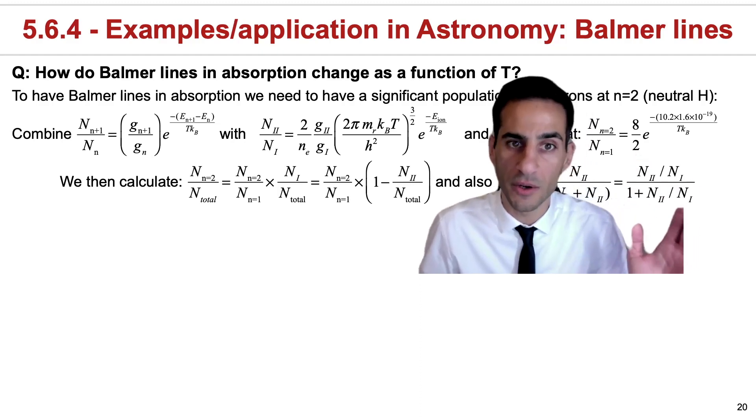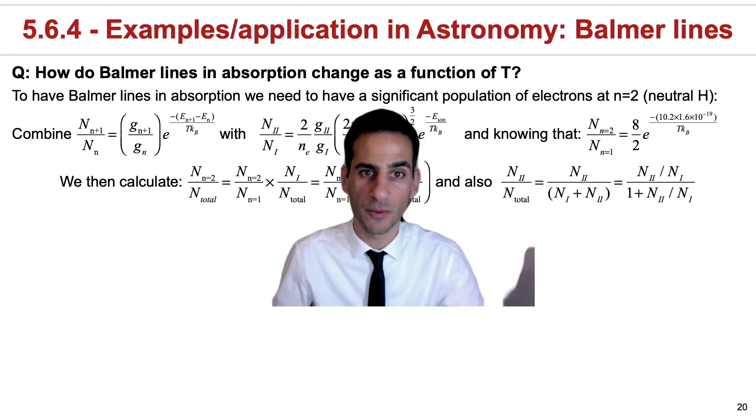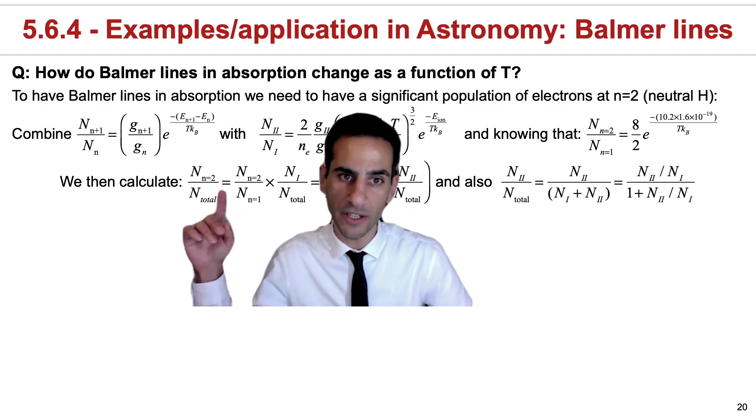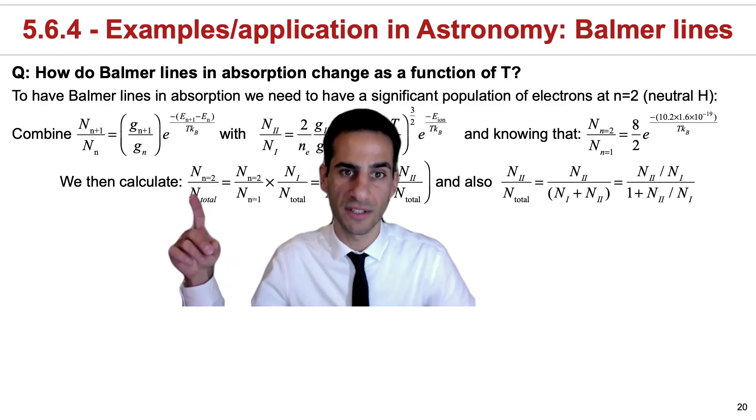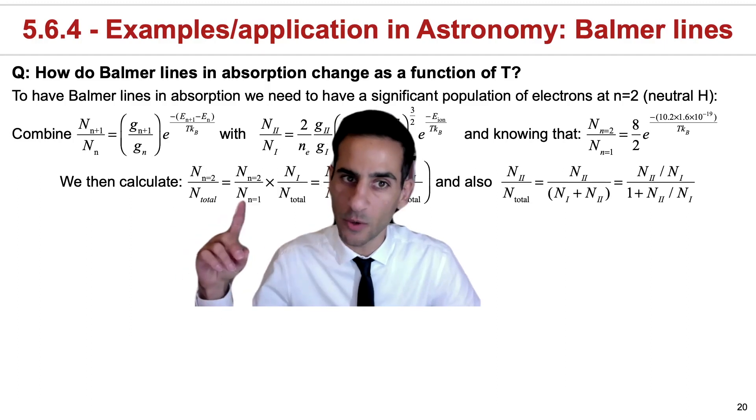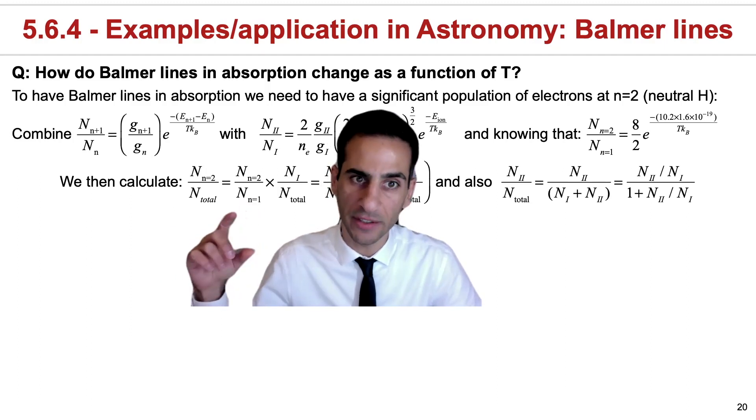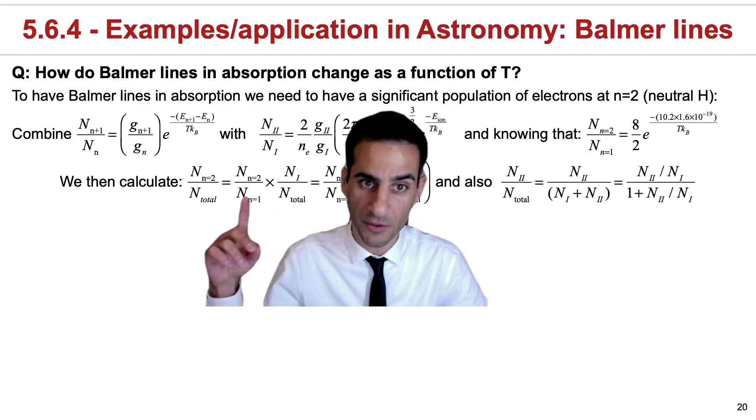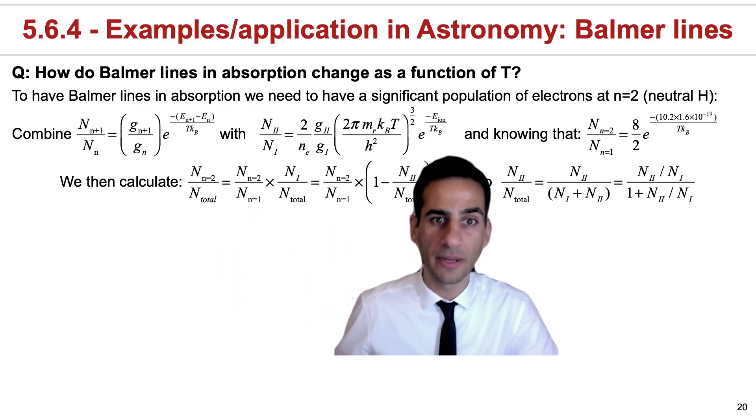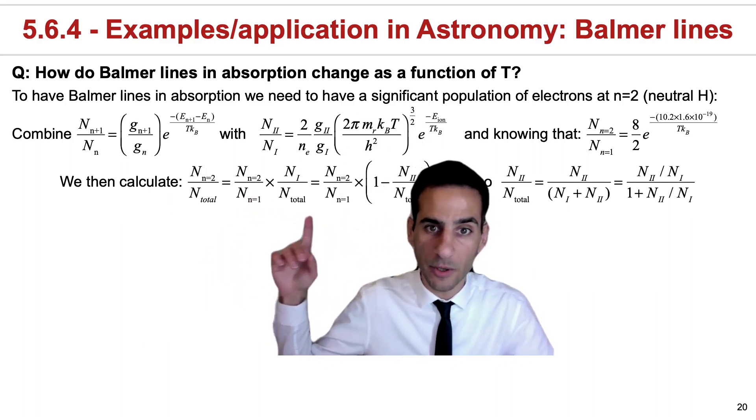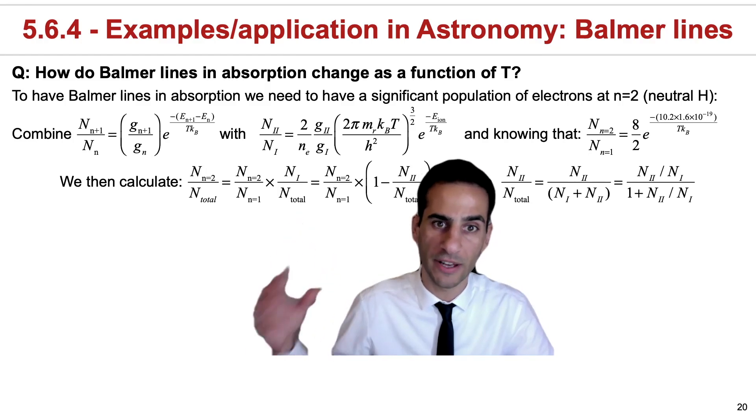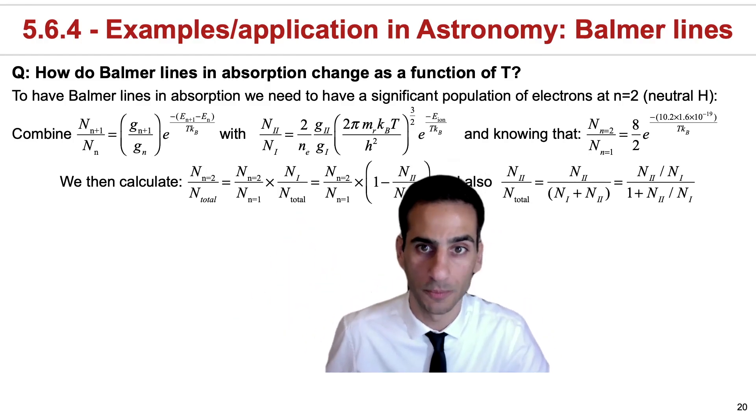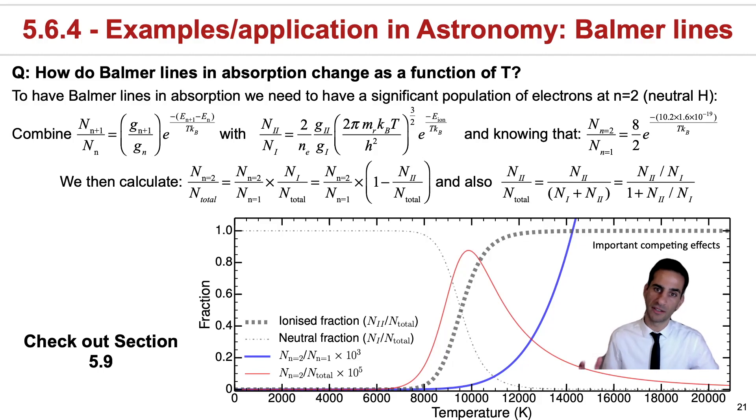And we can also very easily realize that what we want to calculate is essentially the ratio of atoms at n equals 2 versus the total number of hydrogen atoms. So what you really want in order to predict the strength of Balmer lines is to look at this ratio, which you can get with the Boltzmann equation. But it's also important that you will need to be multiplying by the total number of atoms that are neutral. If you do all these calculations, then you can make these relatively simple predictions.